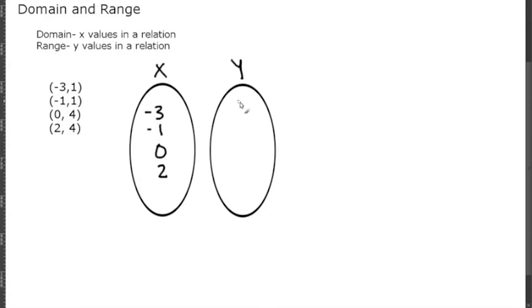1, 1 - so we don't have to write 1 again - 4, and 4 - so we don't have to write 4 again because those are repeated. So the mapping would look like -3 to 1, -1 to 1,